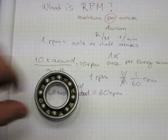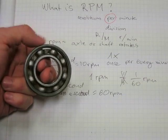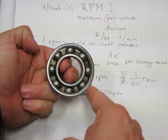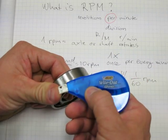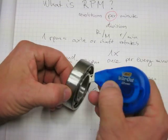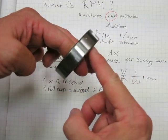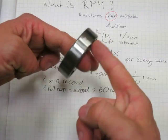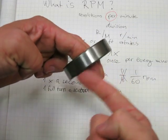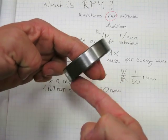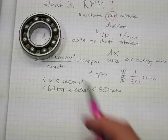The same applies to bearings. This is a set of ball bearings in the middle of a wheel. If I mark one spot on it and rotate it once every second, you can see it rotating at about 60 RPM. Double it and it's 120 RPM, triple it and it's 180 RPM.